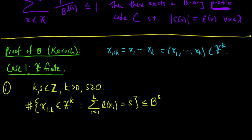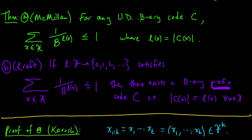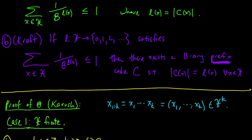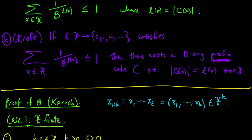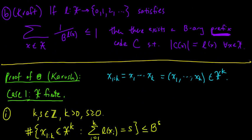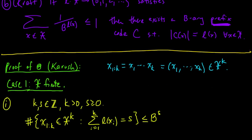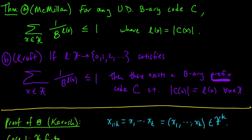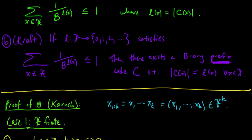Here b is the base of our b-ary code, and l denotes the length of the codeword c(x) for each source symbol x. In part A our assumption is that we have a uniquely decodable b-ary code, and we're trying to prove that this inequality is satisfied.